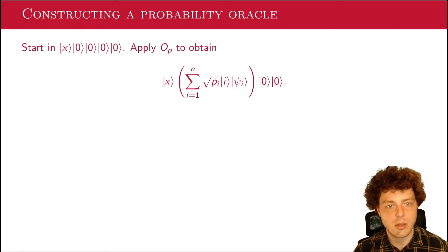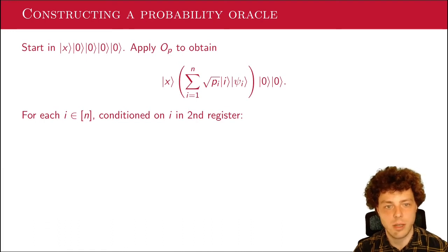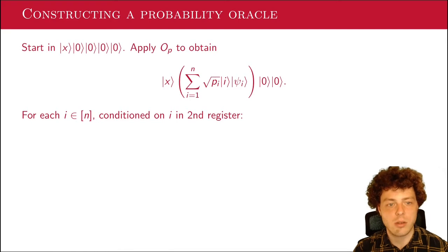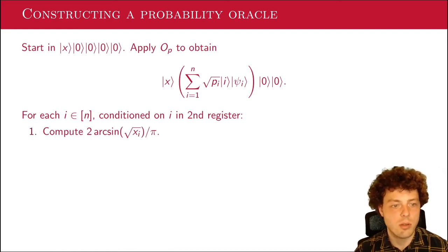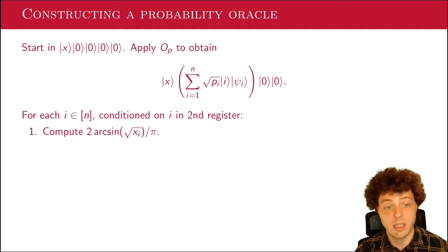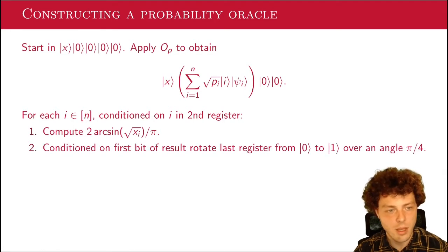So how do we do this? To construct a probability oracle, we start in a state ket x with four ancillary registers next to it. And we apply our probability oracle O_P to obtain the following state that's on the slide here. So we have x and then we have this superposition, which when measured would give i with probability p_i. Then from here, we're going to do the following for each i from 1 up to n. We'll do the following conditioned on i being in the second register.